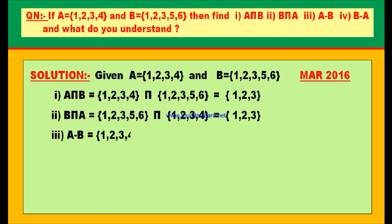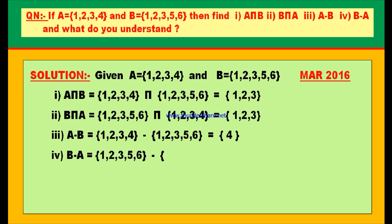Third bit: A minus B. A = {1, 2, 3, 4} minus B = {1, 2, 3, 5, 6}. Strike out the common elements; only 4 is left in the first set. Therefore, A minus B = {4}.